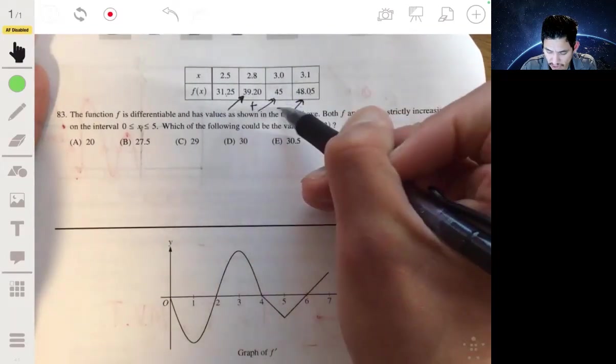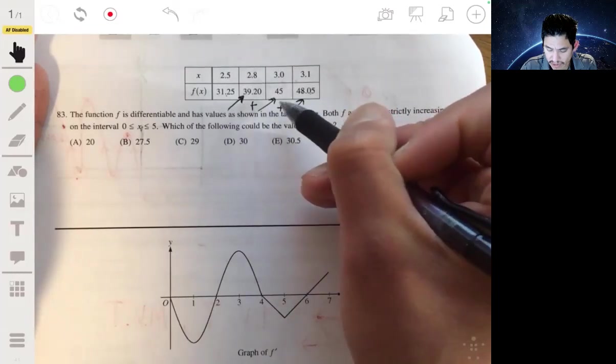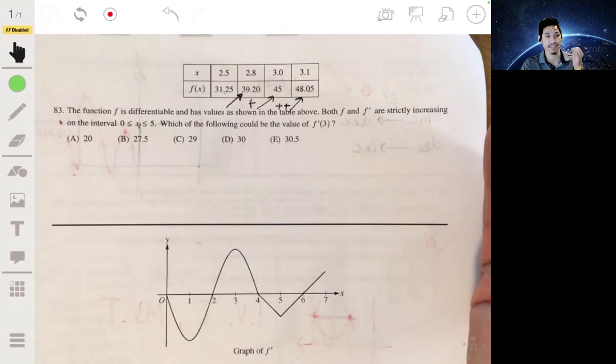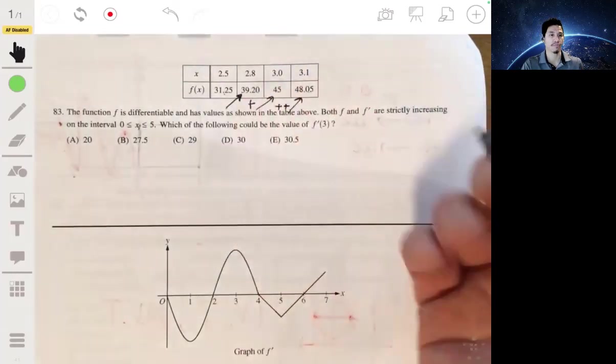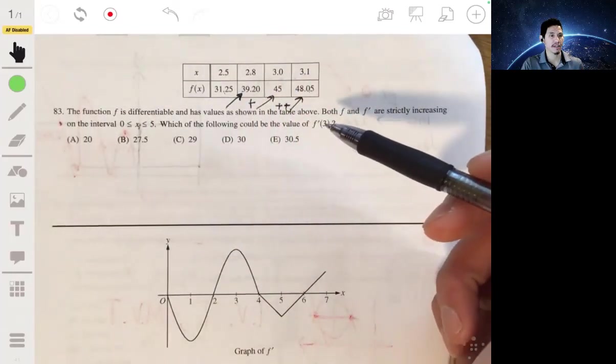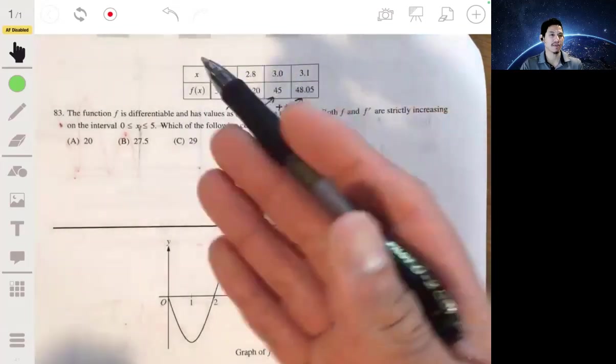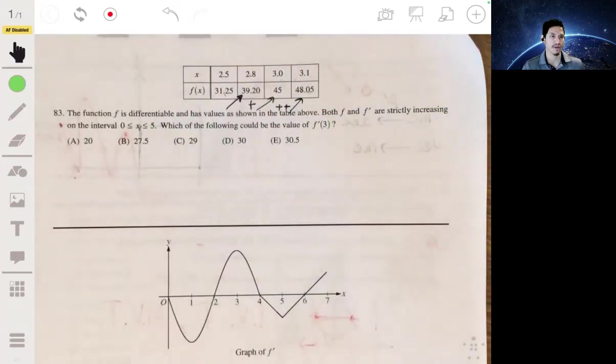The slopes have to get larger, not by a certain amount, but more than the previous slope. So if we want to find the derivative at three, we can get an estimate of what's going on before three and after three.